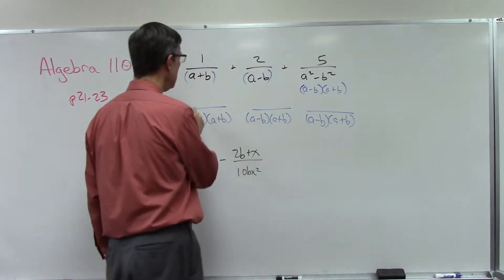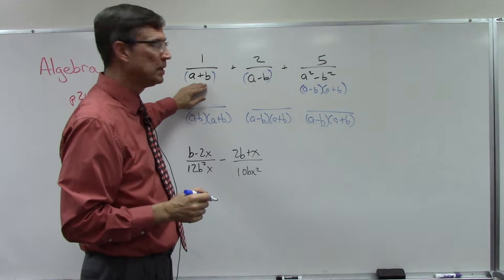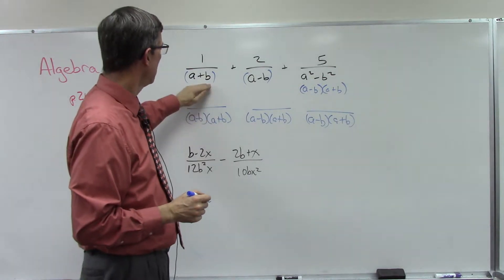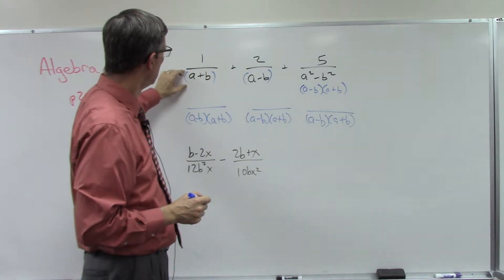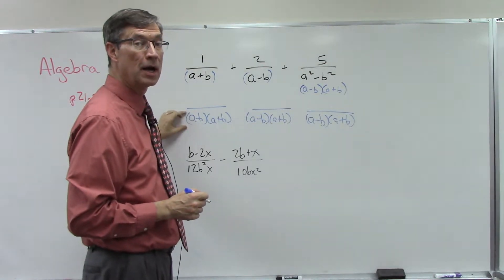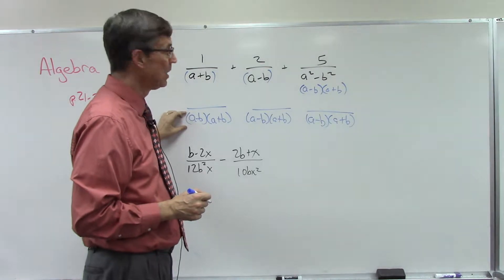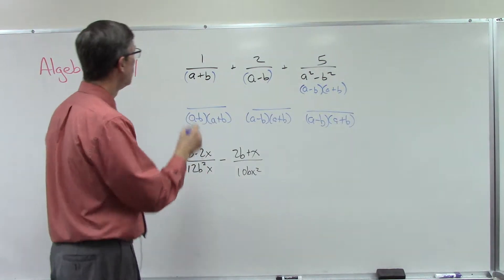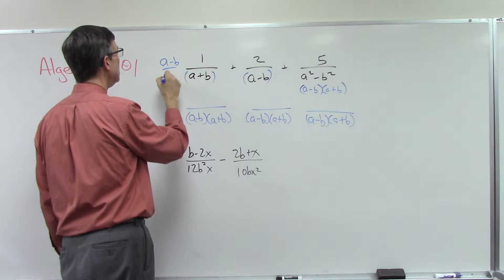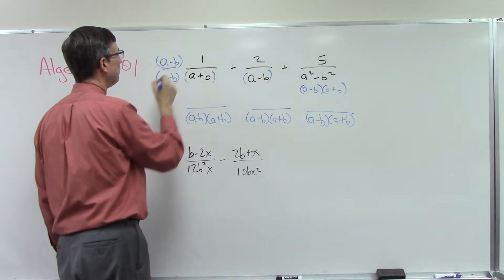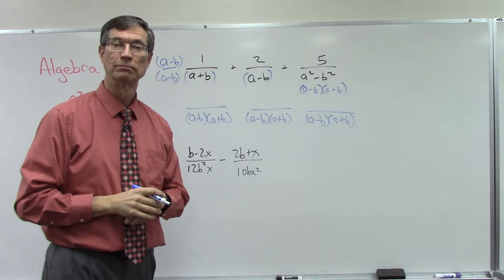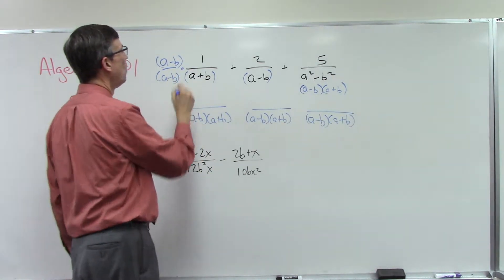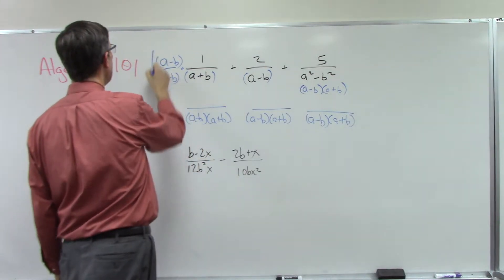Now I have all three with the same denominator, but I have to look at this one and say: this started with (a plus b), and to get the common denominator, what is missing? What do I have to multiply times this denominator to get my common denominator? What's missing is the (a minus b), because I already have the (a plus b). So I'm going to multiply by (a minus b) top and bottom. Anything divided by itself is one, so I'm actually multiplying by one — which is why this works.